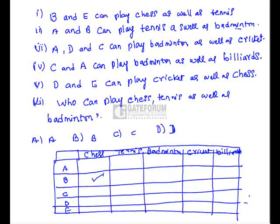Chess and then tennis. A and B can play tennis as well as badminton, so A can play tennis as well as badminton. B also can play tennis and badminton.